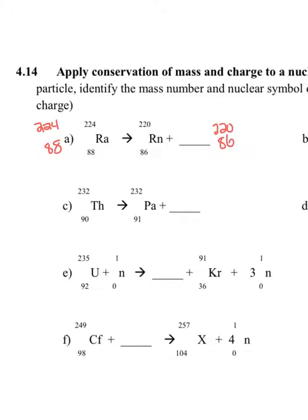So all I really have to do is subtract 224 minus 220, and I get that I should have a 4 that I'm missing on top. And if I do 88 minus 86, I should see that there's a 2 that I'm missing on the bottom. And if I look up what element or particle goes with that charge, that's either helium or an alpha particle. Once I put that helium or alpha particle in, I should have my top and bottom numbers adding up to the same thing.